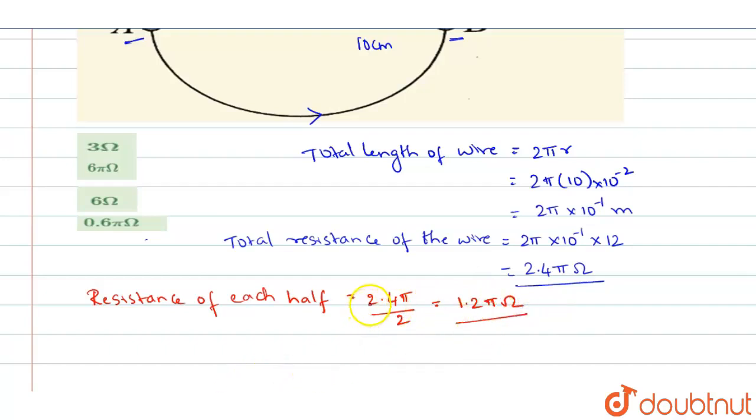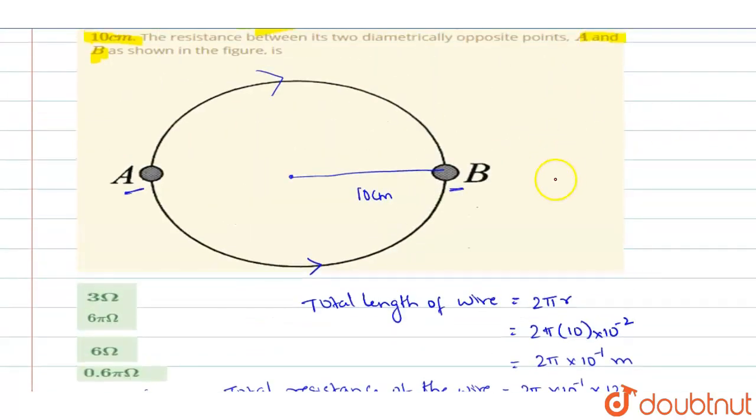Now about this diameter both parts are in parallel right. When you are connecting a wire like this it will be treated like this whole thing. It can be treated like you have 2 resistors connected like this.